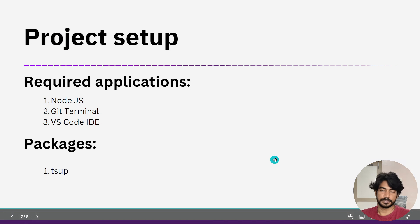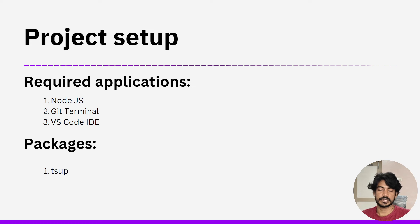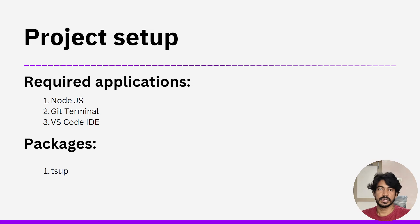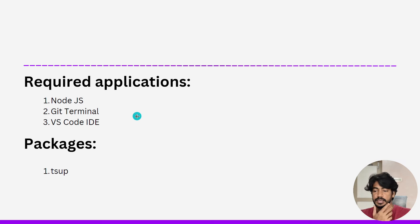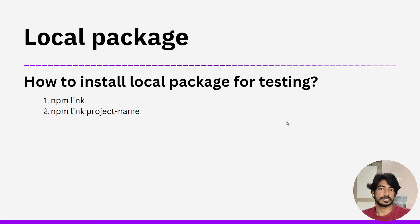Let's see what we need for our learning today. First of all, we are going to do the project setup. As I said in the earlier video, we have to install Node.js and VS Code editor as our IDE. Additionally, you can also install the Git terminal. If you are using Windows, you'll have Command Prompt or PowerShell, but mostly I use Git terminal. We also need two packages: tsup and TypeScript.